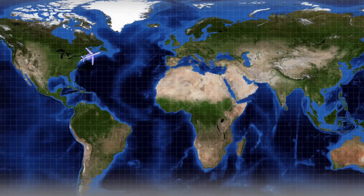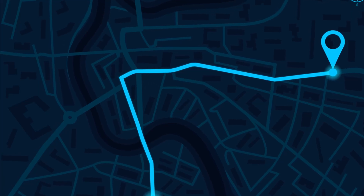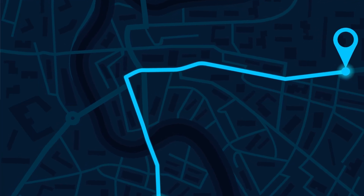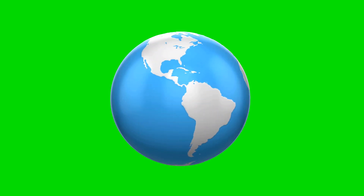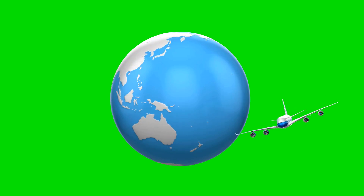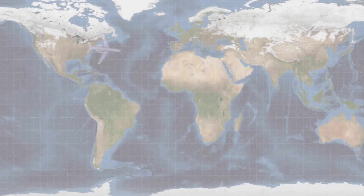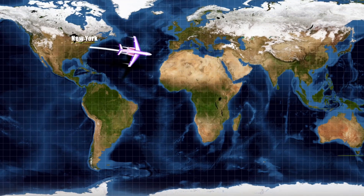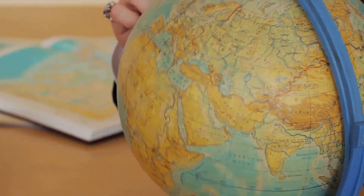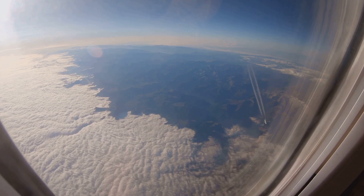Have you ever looked at a map of airplane routes and wondered why they are curved? After all, the shortest distance between two points is a straight line — right? This simple question leads us to a fascinating exploration of our planet's shape, atmospheric forces, and the complexities of air travel. On a flat map those curved paths seem to make no sense, but our world is not flat — it's a sphere. This fundamental fact changes everything about long-distance travel, especially in the air.